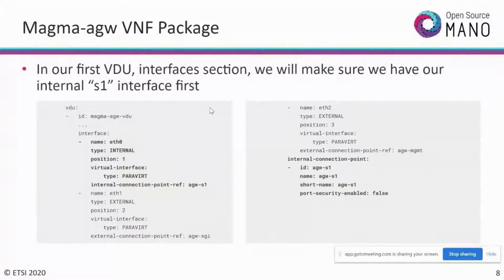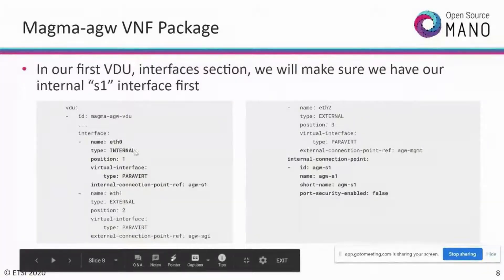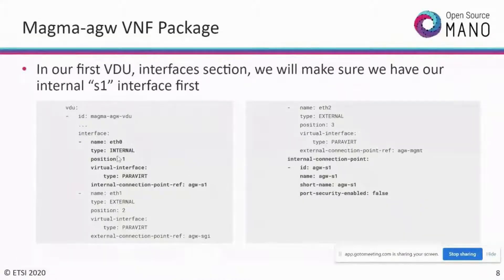In the YAML, you'll find a section called VDU, under which Magma access gateway VDU will be declared with its interfaces. Three different interfaces — eth0, eth1, and eth2 — are declared. After declaring interfaces, we identify which is internal and which is external. The first interface is declared as internal type for VM-to-VM communication — the access gateway and eNodeB communicating. The virtual interface type is paravirt, and the internal connection point reference is given a logical name like access-gateway-S1.